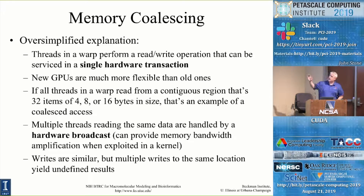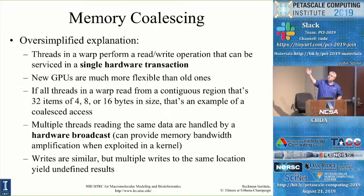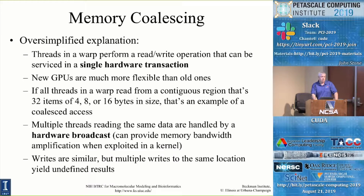As long as threads in a warp read from a contiguous region that's 32 items of 4, 8, or 16 bytes in size, that gives you coalesced access. To get near peak performance, you want them to read the larger sizes. To hit 99% of the theoretical peak memory bandwidth, you have to have each thread reading 16-byte quantities, not 4-byte quantities. The 4-byte quantities might get you 80% of performance, but to get the full performance you want the larger payload size. That's why you might want to use special types like float2, float4, double, double2, etc.